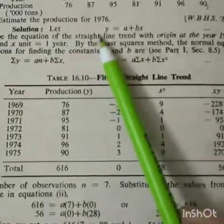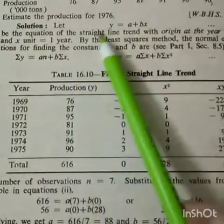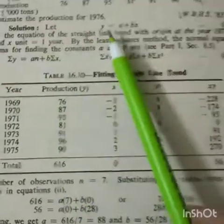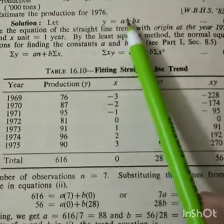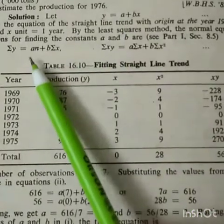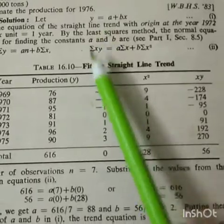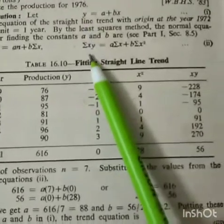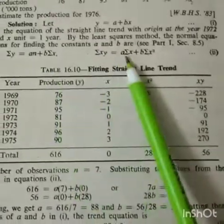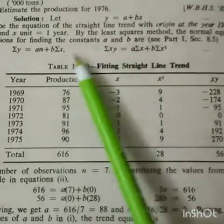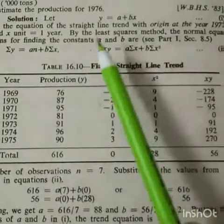These equations will remain the same. First equation: taking summation of y as it is, a constant so summation of constant is n times a, n times b times summation of x. Then we multiply with x and take the summation. These two equations will remain same in all the problems if we take straight line trend.